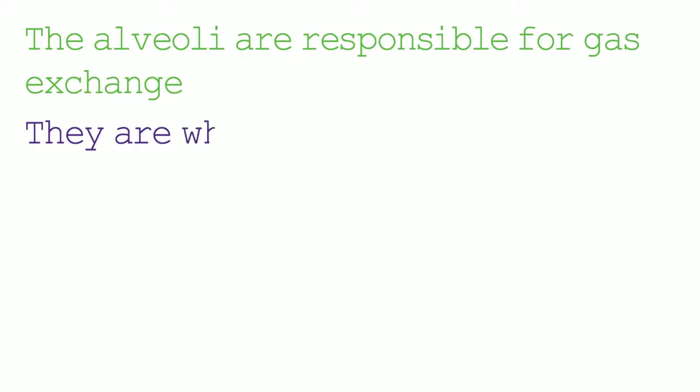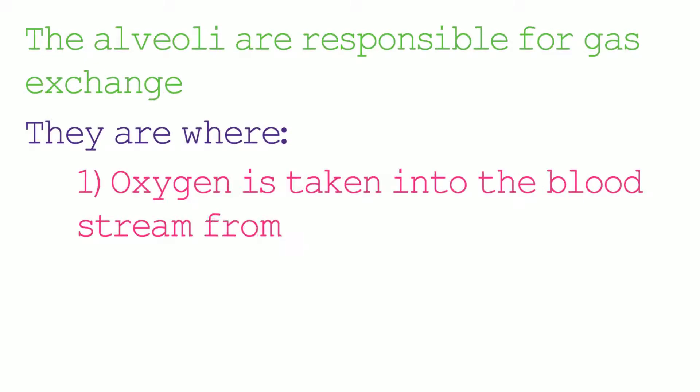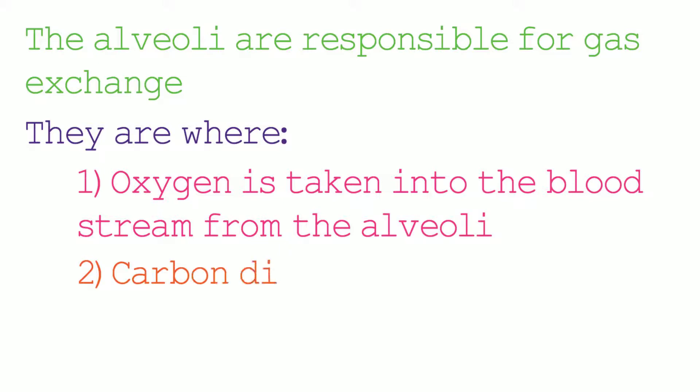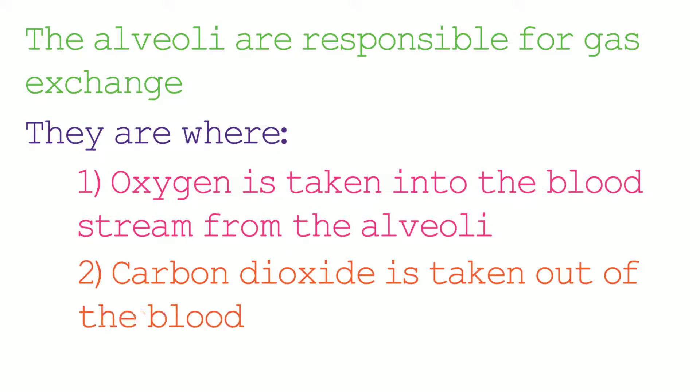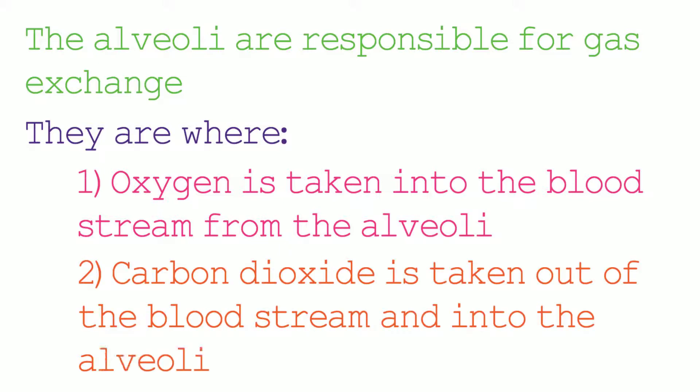The alveoli are responsible for gas exchange. They are where oxygen is taken into the bloodstream and carbon dioxide is taken out of the bloodstream. Oxygen enters the bloodstream from the alveoli and carbon dioxide moves from the bloodstream into the alveoli.